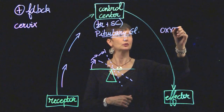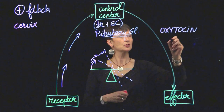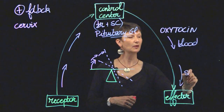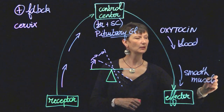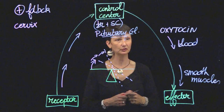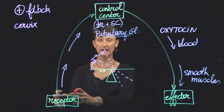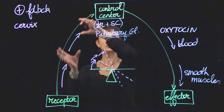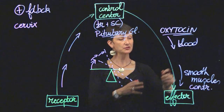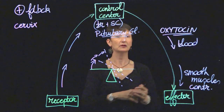Oxytocin — which some of you might have been given to induce childbirth, at which time it's often called Pitocin — will flow in the bloodstream and eventually reach the smooth muscles of the uterus. Remember, all muscles and all glands can function as effectors, so in this case the smooth muscles of the uterus are going to be our effectors. Consequently, they begin to contract, which causes our baby to push even harder against the cervix, which causes the release of even more oxytocin, and this causes even more contraction of smooth muscles, such that our receptors continue sending signals to the pituitary to continue releasing oxytocin.